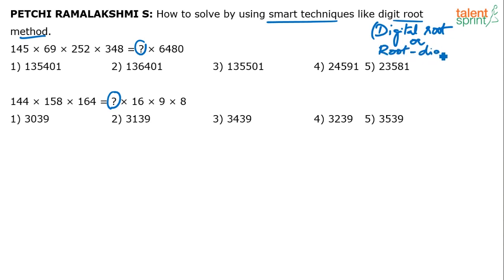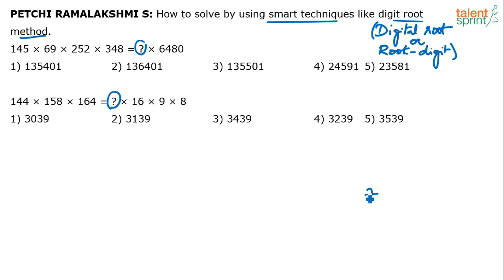I hope all of you know what a digital root or root digit is for a number. Root digit, in simple words, is the sum of the digits. It can also be referred to as the lucky digit. Many of us do this in our day-to-day life but don't know that the concept is called root digit. Root digit is the sum of the digits until you get a single digit number — you keep adding the digits till you arrive at a single digit number.